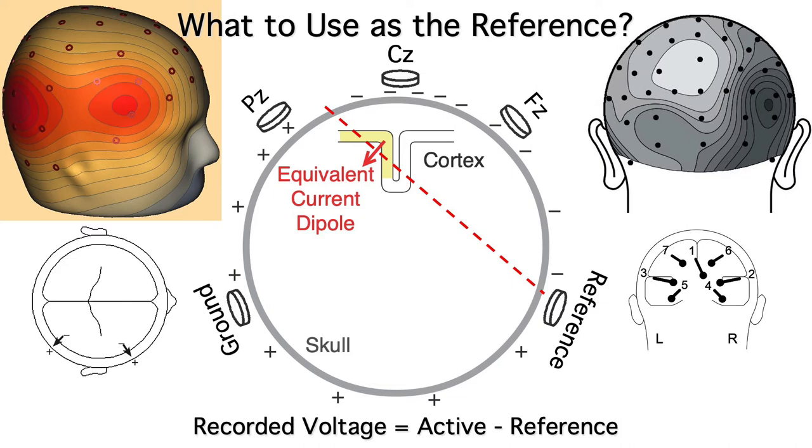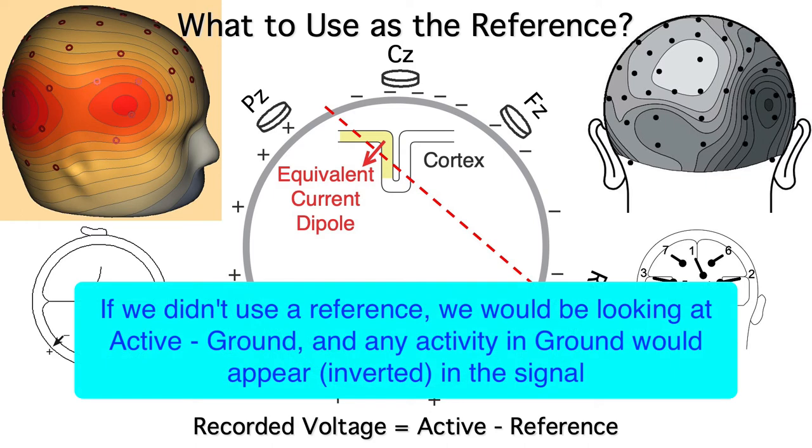So why do we bother using a reference? As I mentioned before, a reference electrode reduces noise in the recordings. And if we eliminated the reference, we'd still be looking at the difference between active and ground, and any activity at the ground electrode would be inverted in our signal.